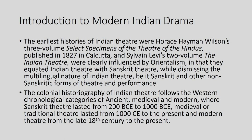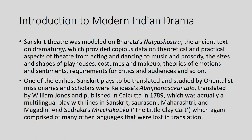The colonial historiography of Indian theatre follows the Western chronological categories of ancient, medieval, and modern, where Sanskrit theatre lasted from 200 B.C., medieval or traditional theatre from 1000 C.E. to the present, and modern theatre from the late 18th century to the present. Sanskrit theatre was modelled on Bharata's Natya Shastra, the ancient text on dramaturgy, which provided copious data on theoretical and practical aspects of theatre — from acting and dancing to music and prosody, the sizes and shapes of playhouses, costumes and makeup, theories of emotions and sentiments, and requirements for critics and audiences.